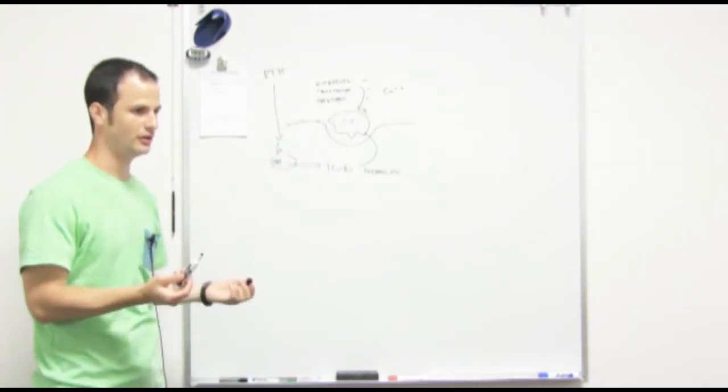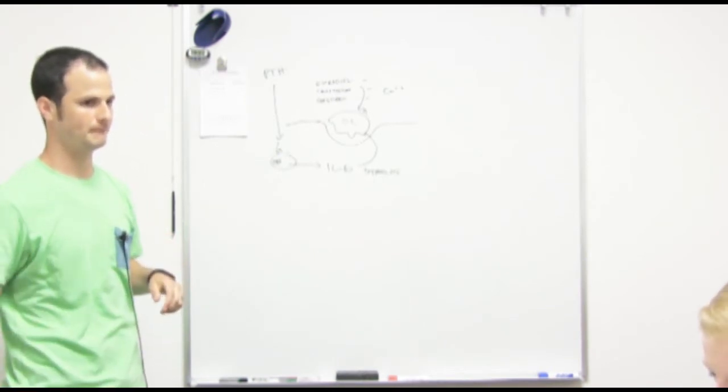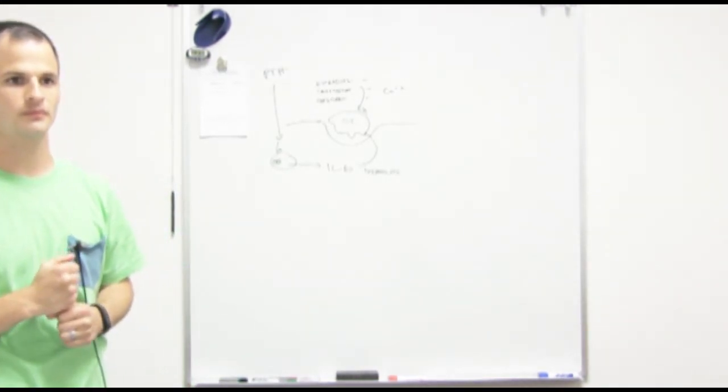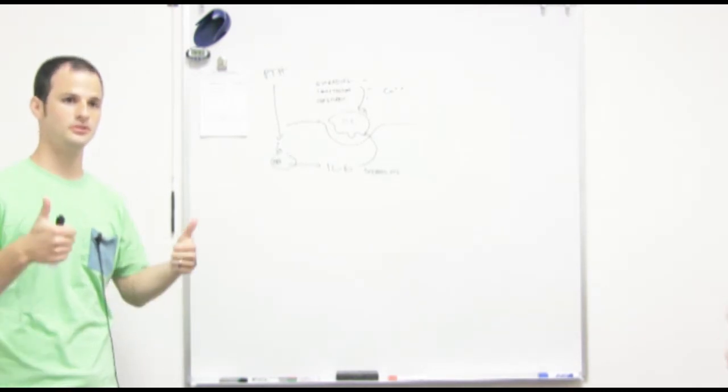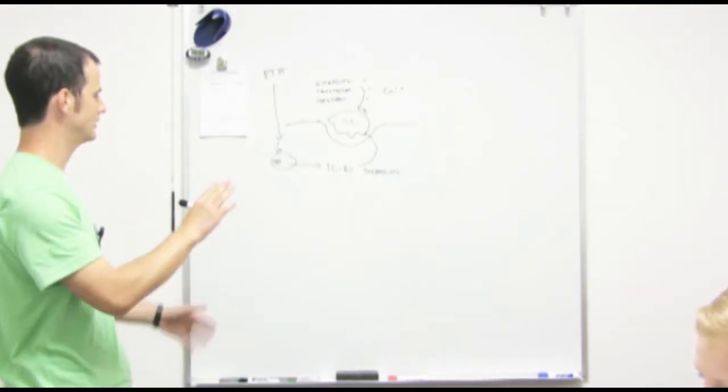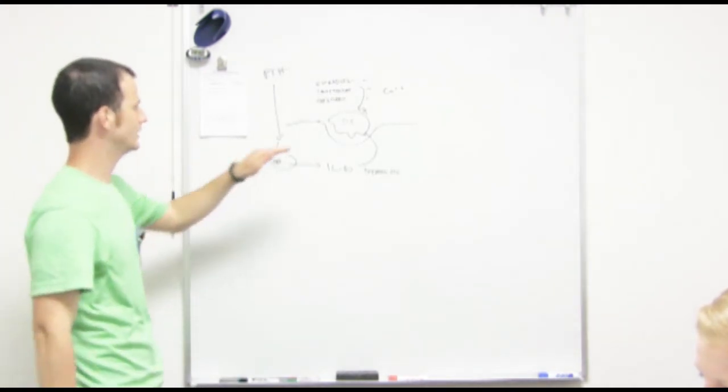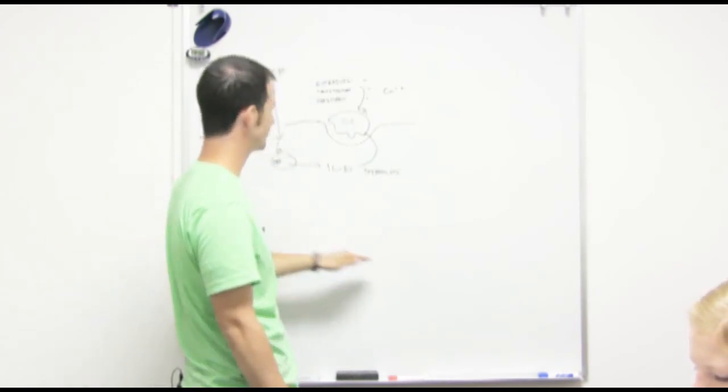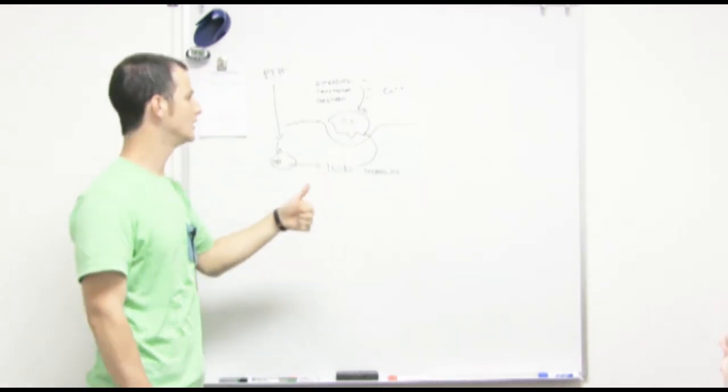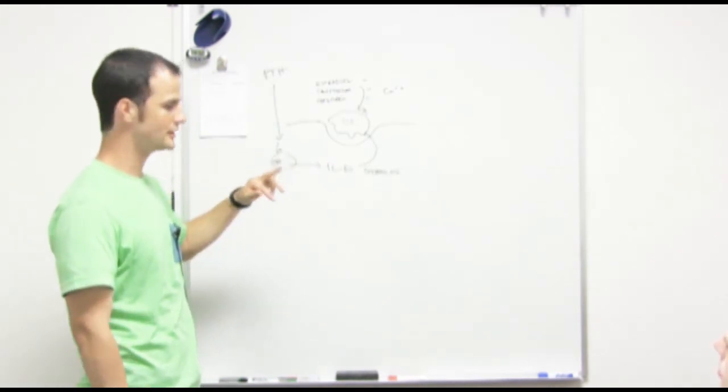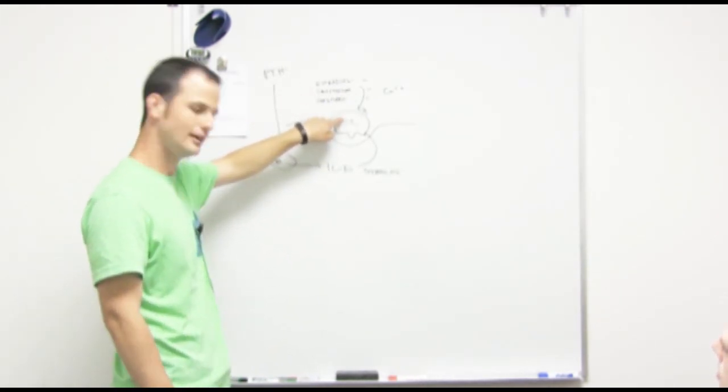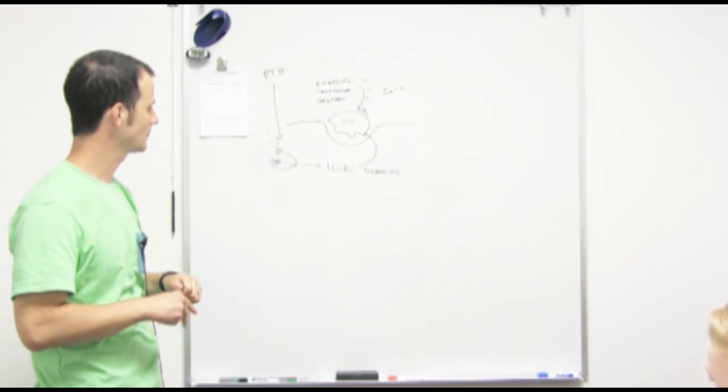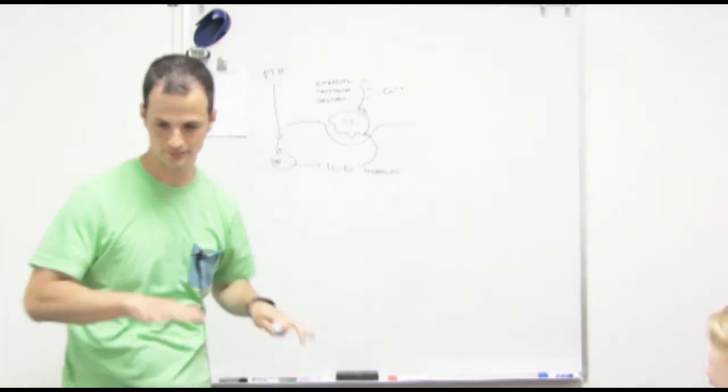So why would your body secrete parathyroid hormone? When your calcium gets low. When your calcium gets low, right, because you want to raise the calcium. And so it's kind of this feedback type of thing where if this level gets low, it stimulates parathyroid to secrete parathyroid hormone, which stimulates osteoclast activity, raise blood calcium levels. And the opposite, we have these other hormones that inhibit osteoclasts to stop them from reabsorbing the calcium so that osteoblasts can lay it down.